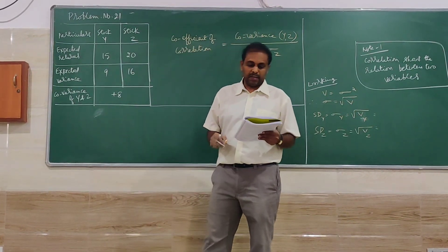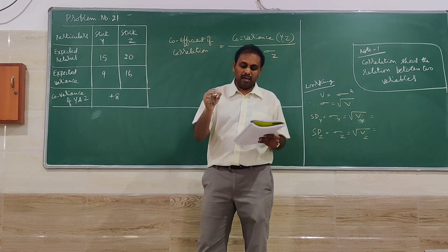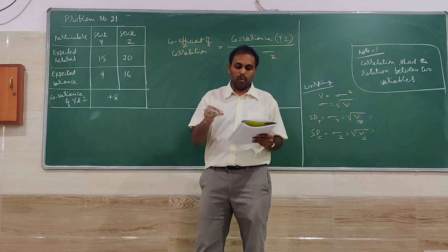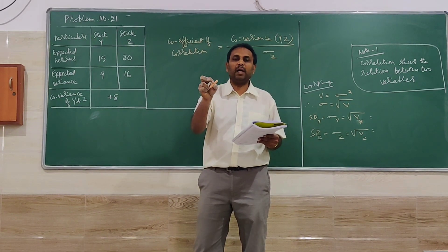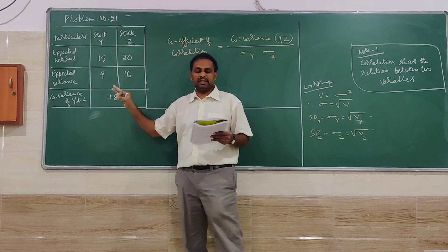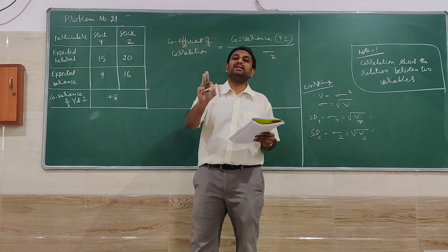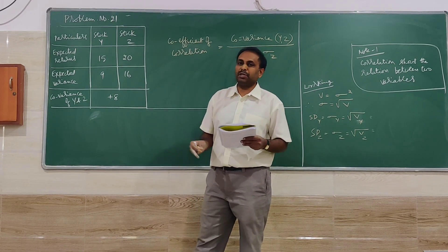The information given are expected returns and expected variance as well as covariance of Y and Z. The question goes like this: Does an investor gain any advantage of holding the sum of Y and Z? By having both shares, is it useful for the investor or not has to be decided. That is what the question is all about.